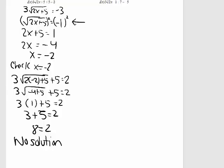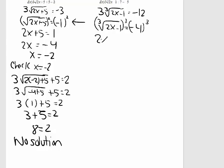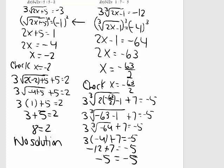Let's take a look at the next example. I want to get the cube root by itself, so I'm going to subtract the 7 first, then divide by 3. Then I'm going to cube both sides, add the 1, and divide by 2. The last line is negative 5 equal to negative 5, so negative 63 over 2 is a solution to this equation.